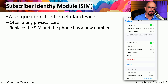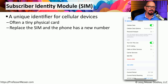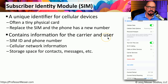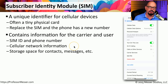One way that your mobile carrier is able to recognize your mobile device is through the use of a subscriber identity module, or a SIM. This is sometimes a physical card inside your mobile phone that contains all of the information identifying what your phone is on that mobile network. You could potentially take that SIM out of your phone, put it in a different phone, and move your number to a different physical device. The SIM contains information about the carrier, the subscriber, a SIM ID, a phone number, and details about the cellular network you're connected to.